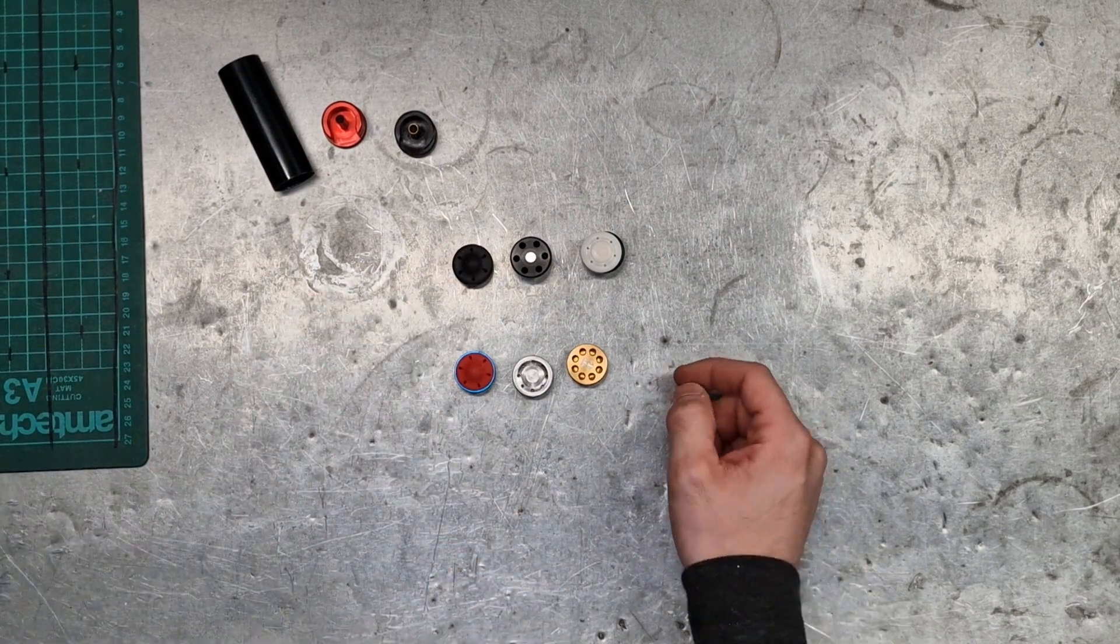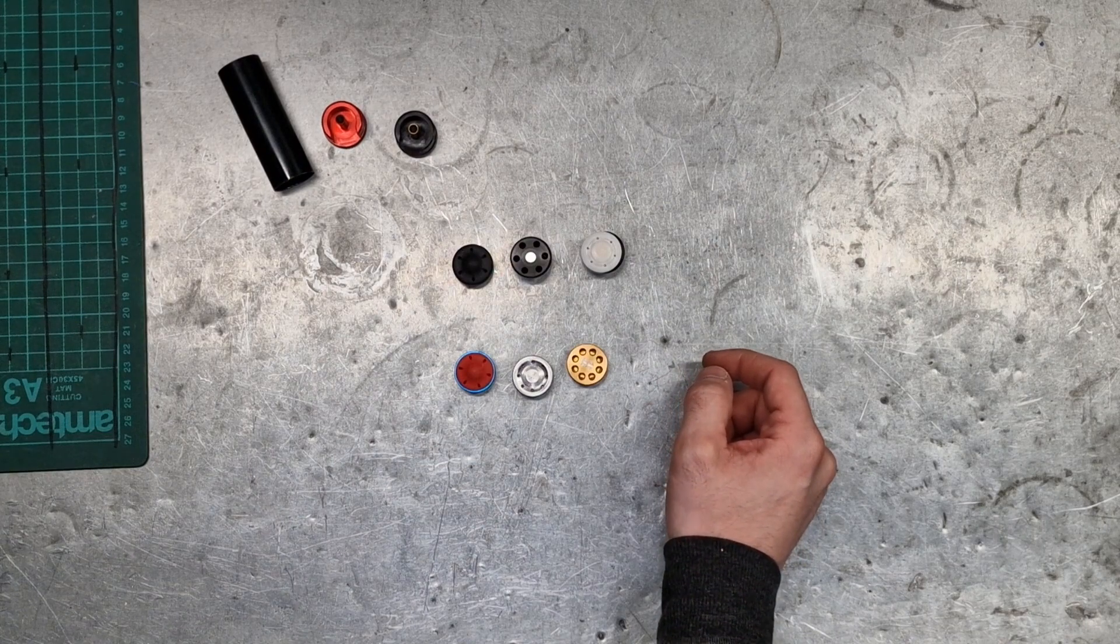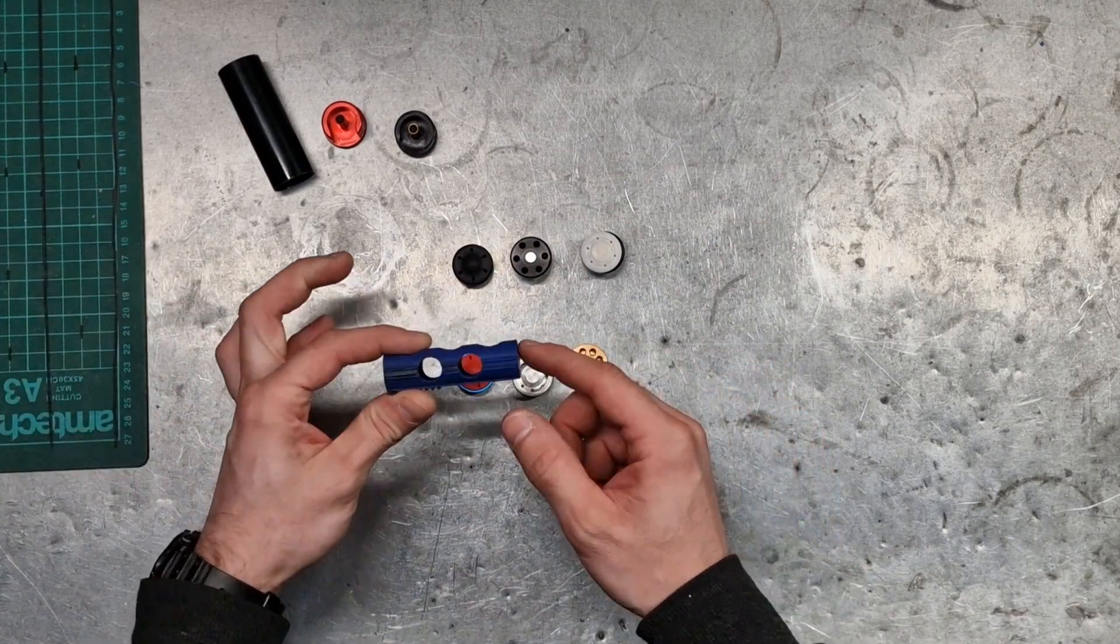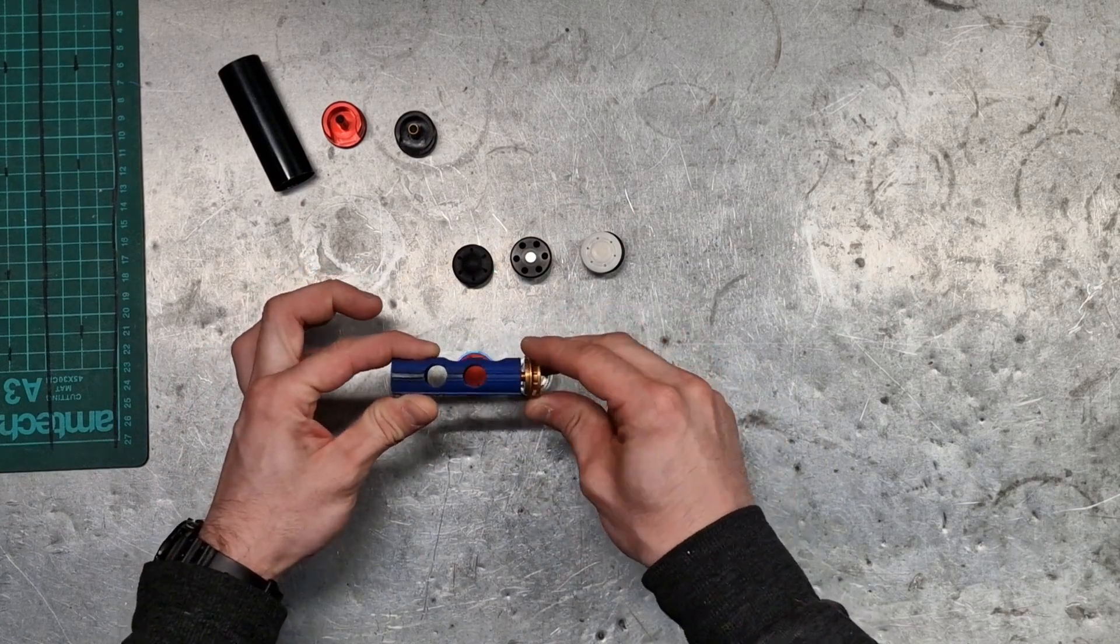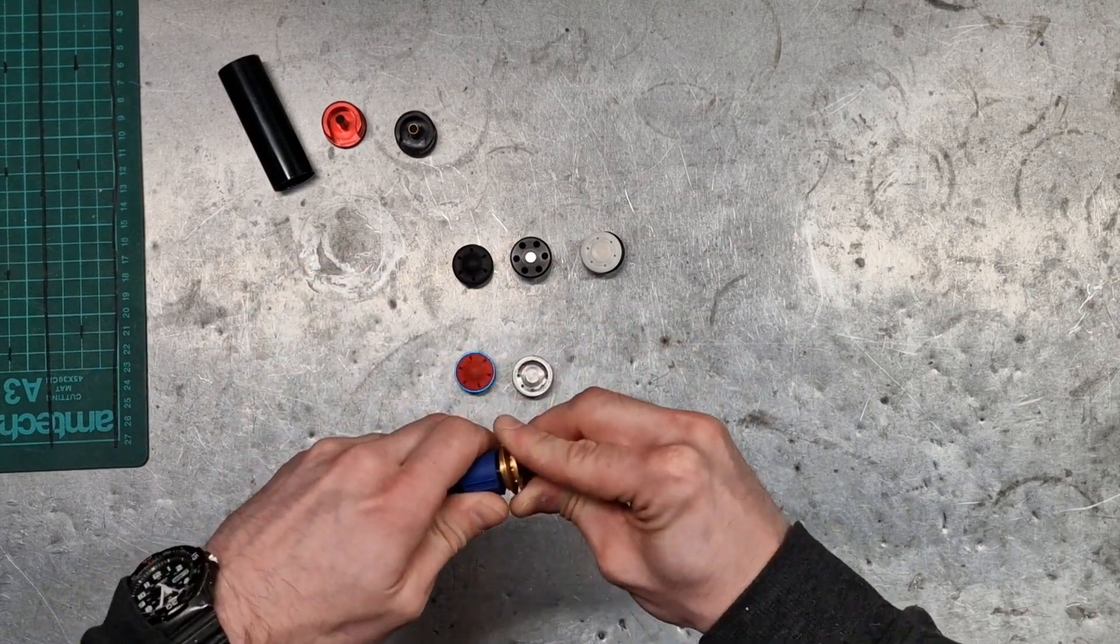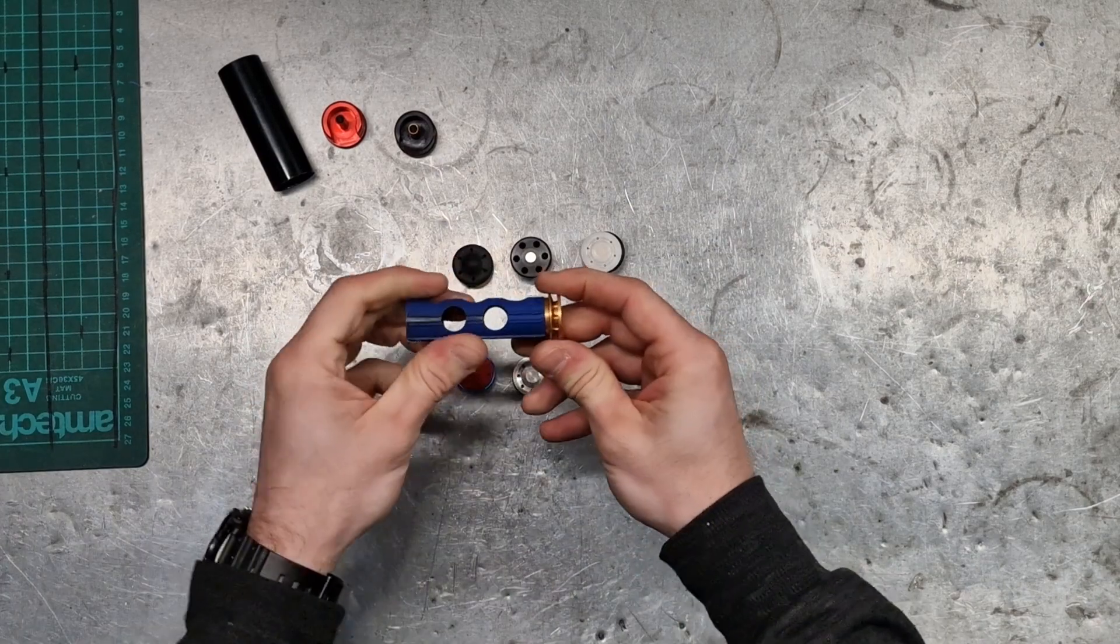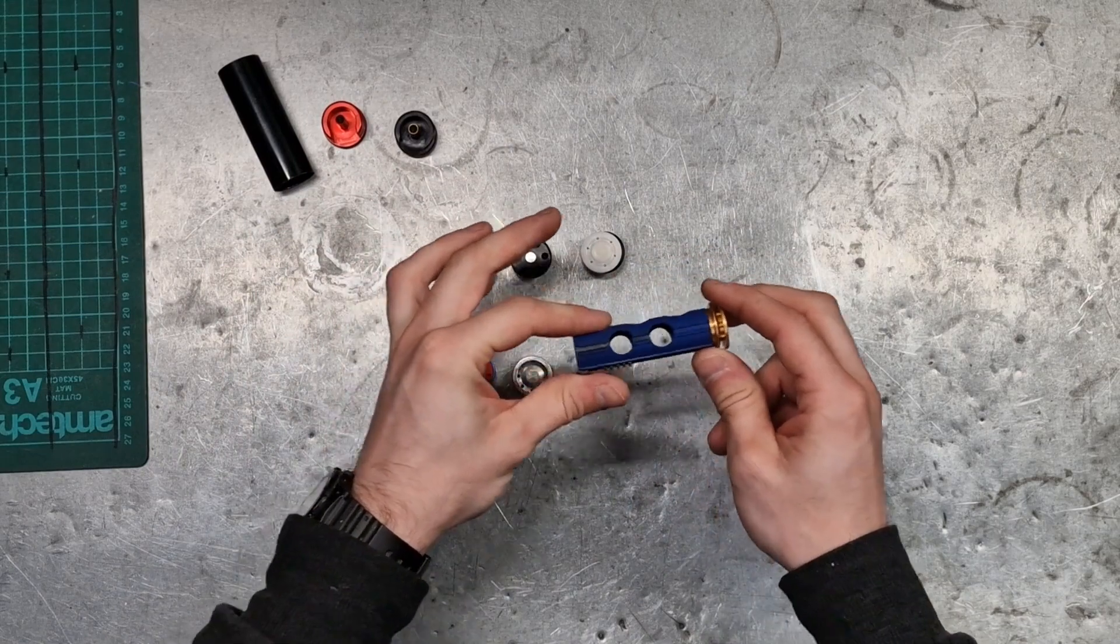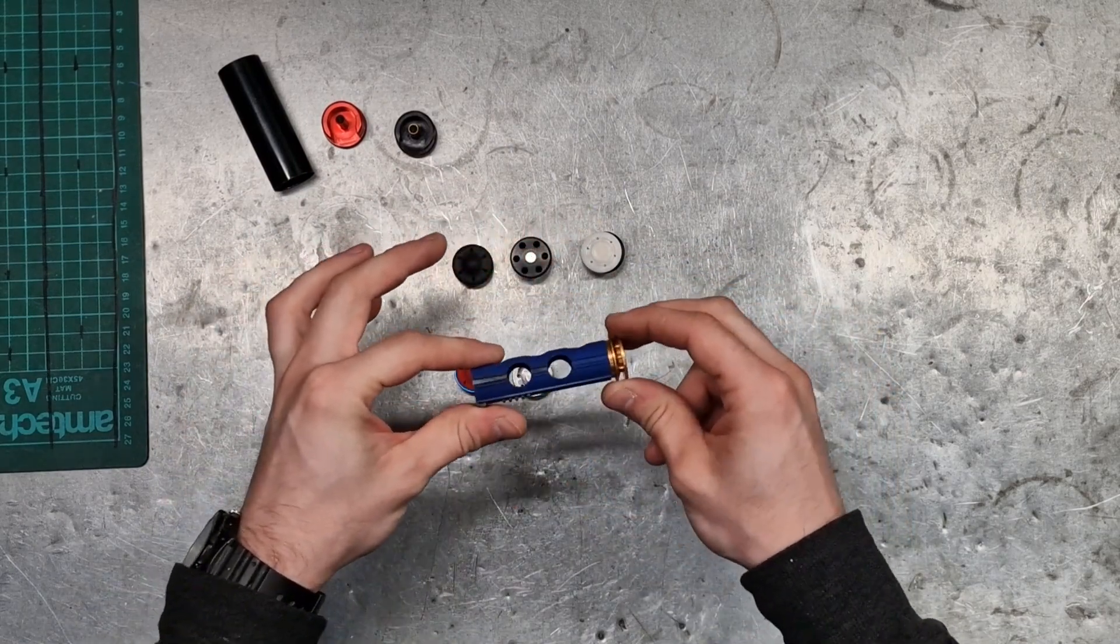What can happen is as the piston's traveling down the piston rails through the cylinder, imagine this is your piston in the gearbox, we've got a piston head on there.